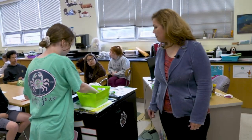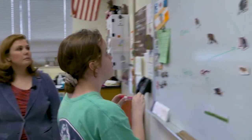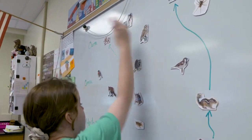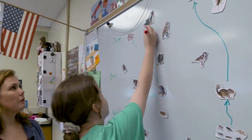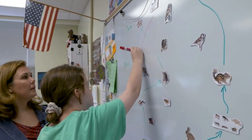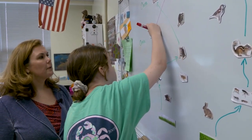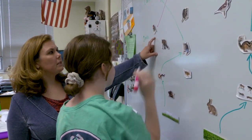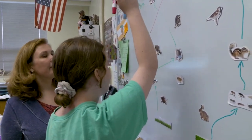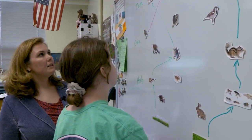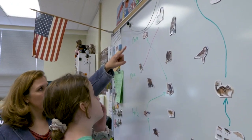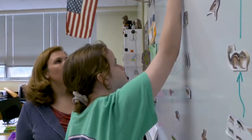A student picks a marker from a bin and walks up to the classroom whiteboard, which contains images of various plants and animals that are part of a food chain. The student is going to add arrows to show the food chain relationship between two animals. The teacher guides: the wolf would eat the bird, so the arrow must point to the eater — the wolf. After an initial incorrect direction, the student corrects the arrowhead to point toward the wolf. Perfect.